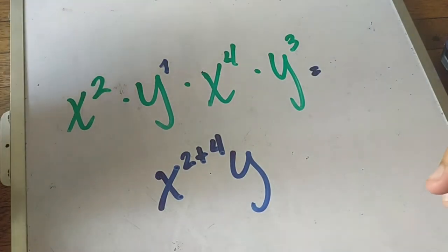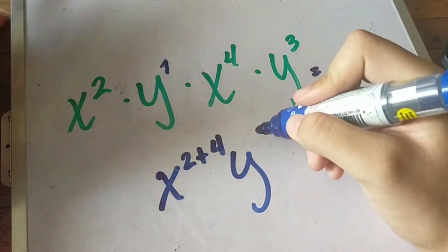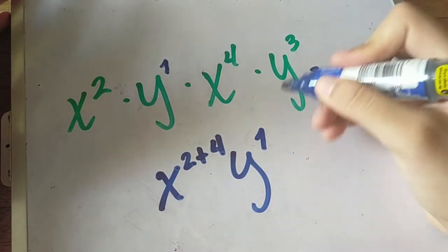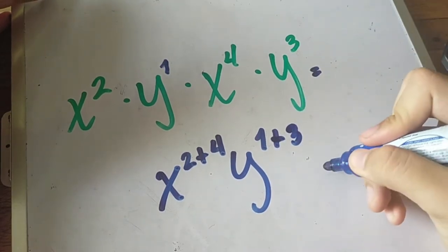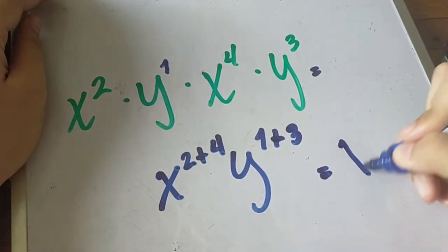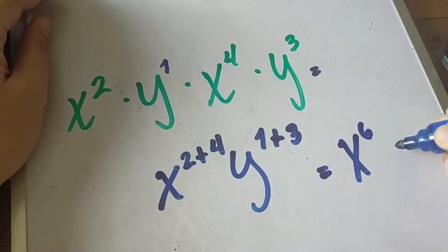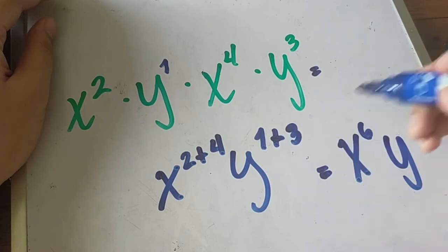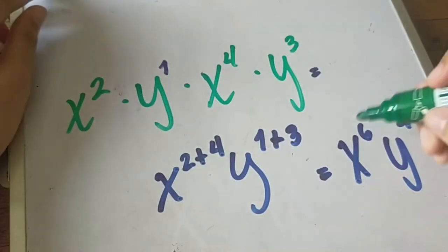So first we copy the exponent of y, 1 and the other exponent of y which is 3, so we add them and simplify. We have x raised to 6, y raised to 4, and this will be our final answer.